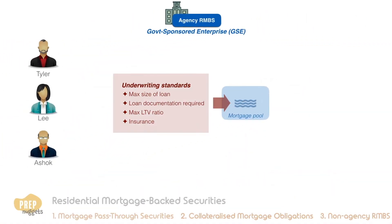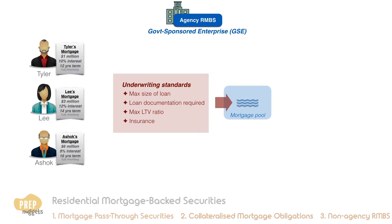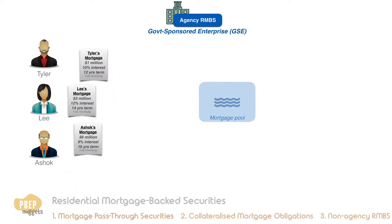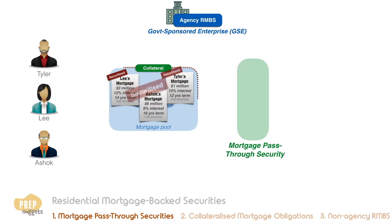Let's examine a hypothetical example of an agency RMBS. Tyler, Lee and Ashok are US homeowners whose mortgages satisfy the conforming mortgage criteria. These mortgages are pooled together as collateral for a mortgage pass-through security. The mortgages are said to be securitized.